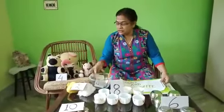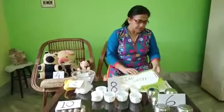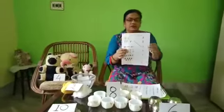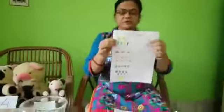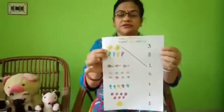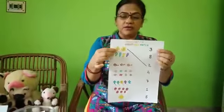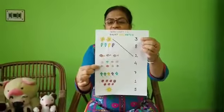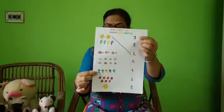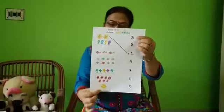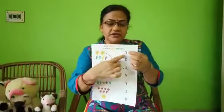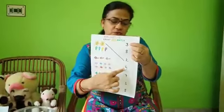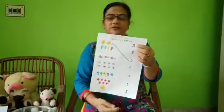Next, with the help of these pictures. Have you seen? Two flowers are here. And flowers, balloons, fish, stars, kites, balls, and sun. And I have written their numbers: three, eight, two, four, seven, one, and five.